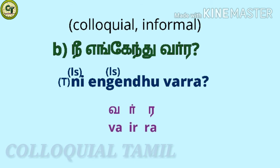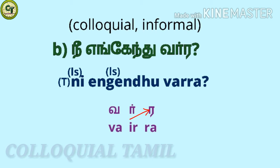The colloquial informal form is 'nee yengi eindhu verra'. For 'nee', you just remove the last three letters in 'neeingal'. Yengi eindhu. For 'verra': 'ver' a short letter, 'ir' a consonant, 're' a short letter. Together: verra. So: nee yengi eindhu verra?